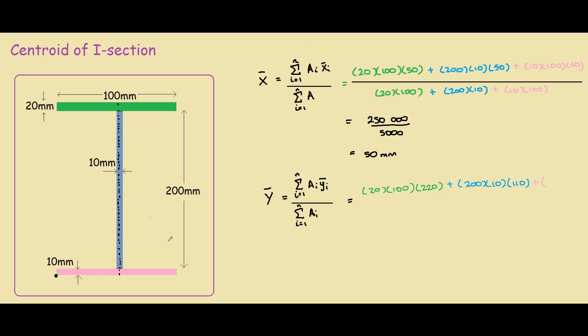Area of pink section is 10x100, and the centroid is 5 from the reference point. I'll quickly write the areas for each section.